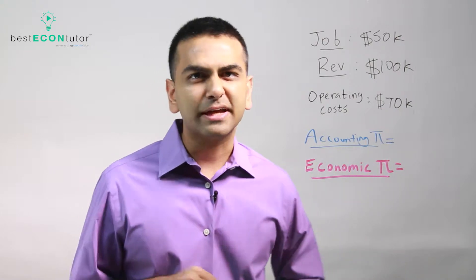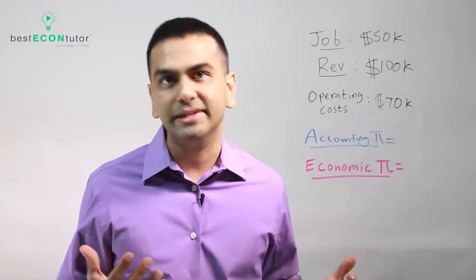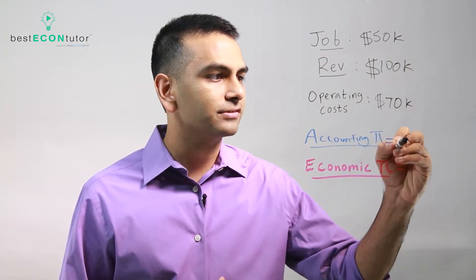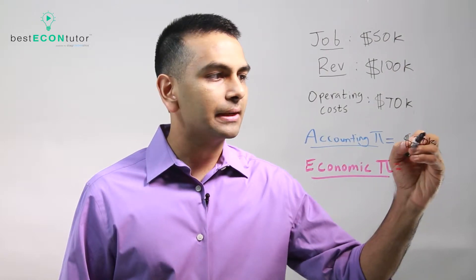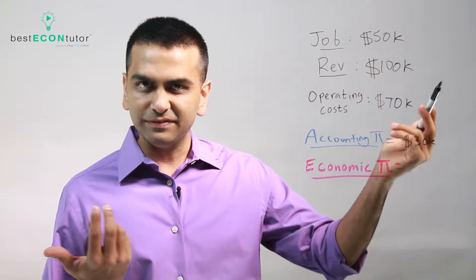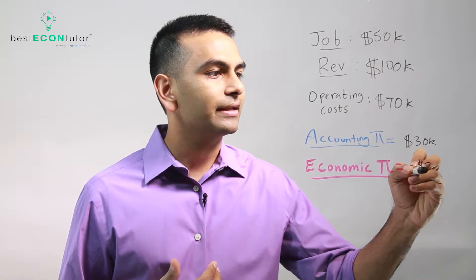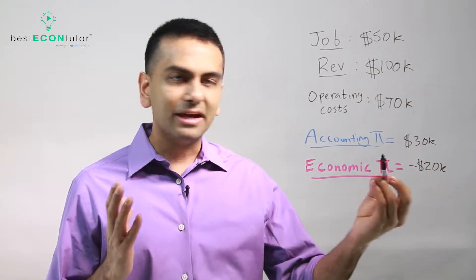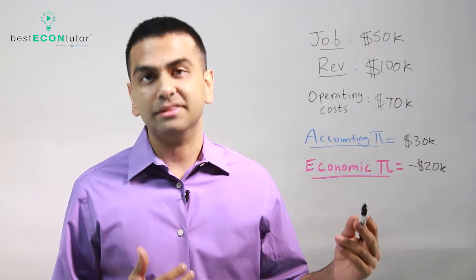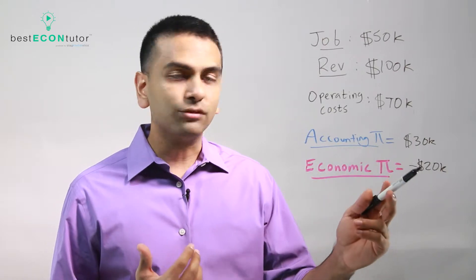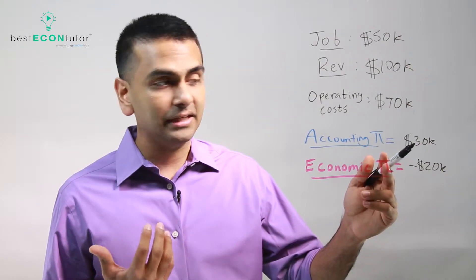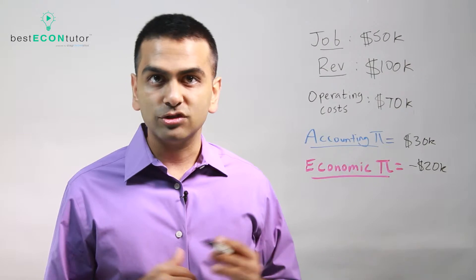Now let's look at what would happen if your operating costs were $70,000. Your accounting profit would be $100,000 minus $70,000, so $30,000. Your economic profit would be that $30,000 minus the $50,000 opportunity cost, so that's negative $20,000. A negative $20,000 economic profit doesn't mean you're in debt — it just means you made $20,000 less than if you had taken a job, since you made $30,000 that year versus the $50,000 you could have earned.